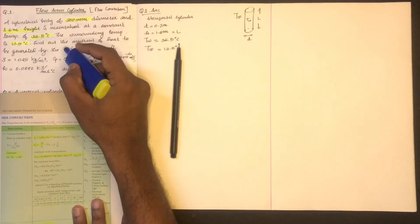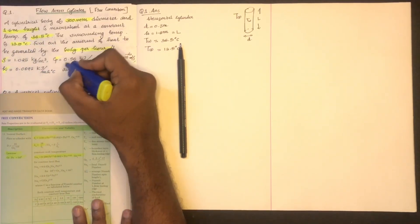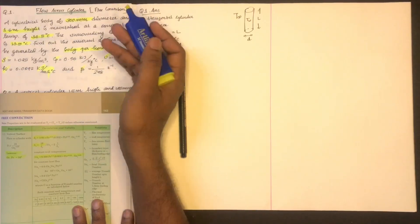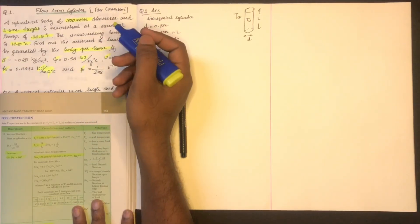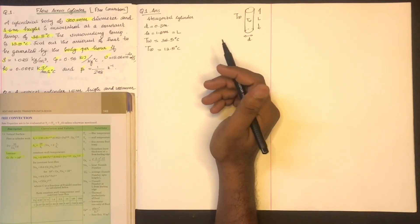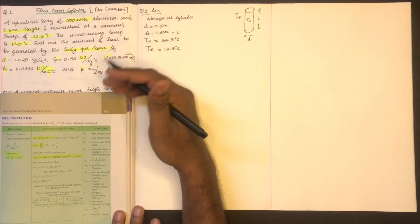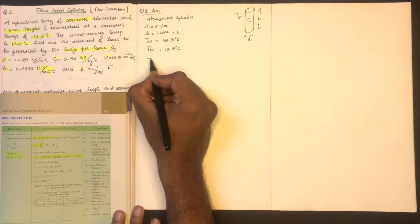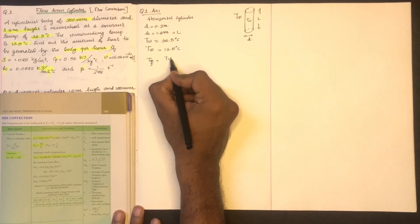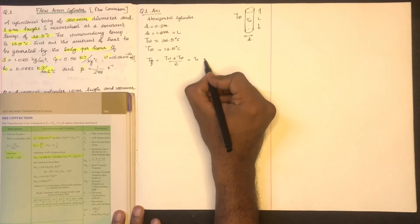The amount of heat is found using properties: ρ, Cp, ν, k, and β. The film temperature Tf is equal to Tw plus T infinity divided by 2. We now substitute the property values.